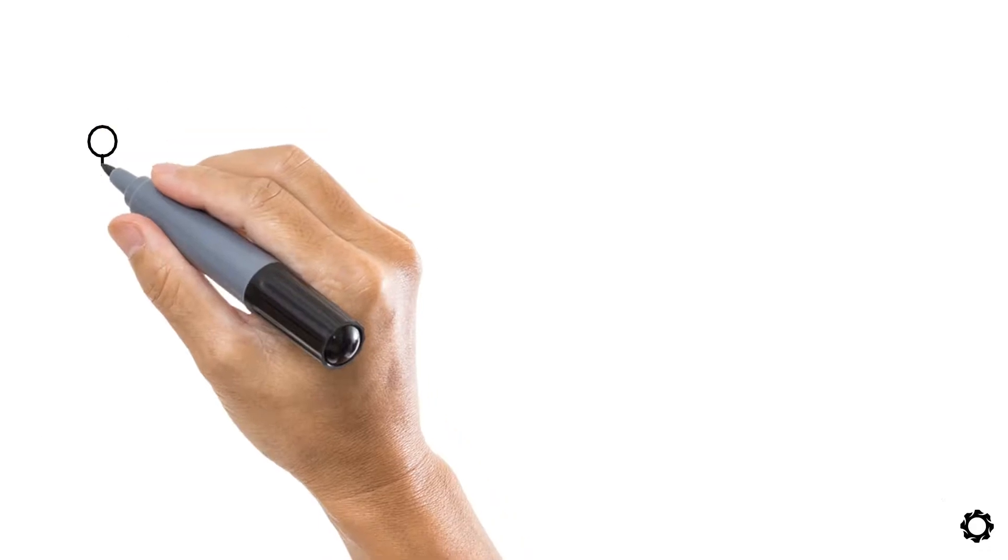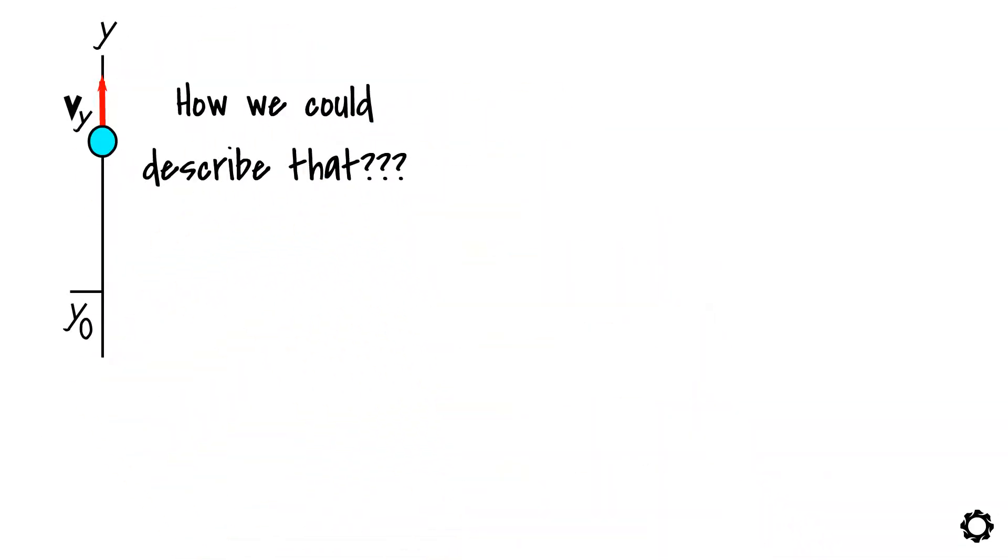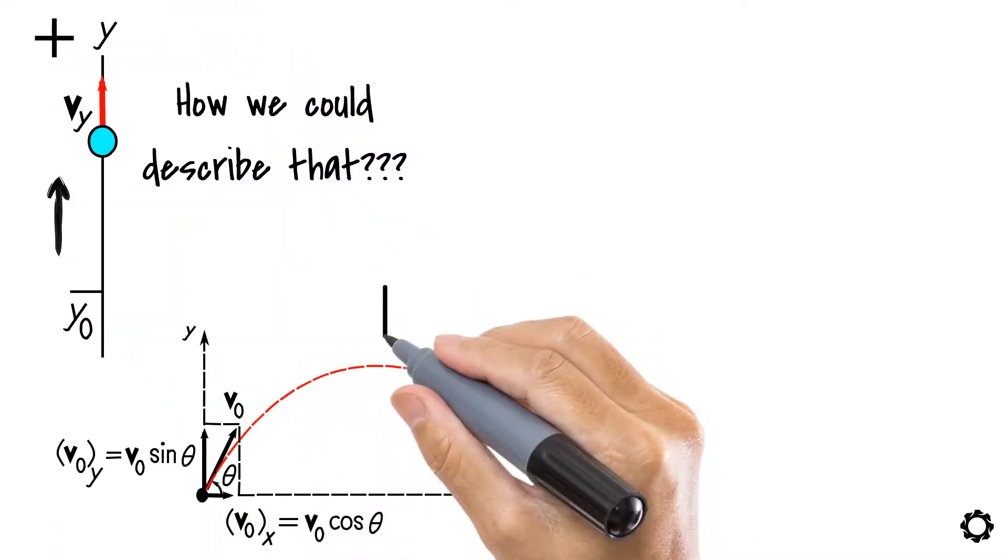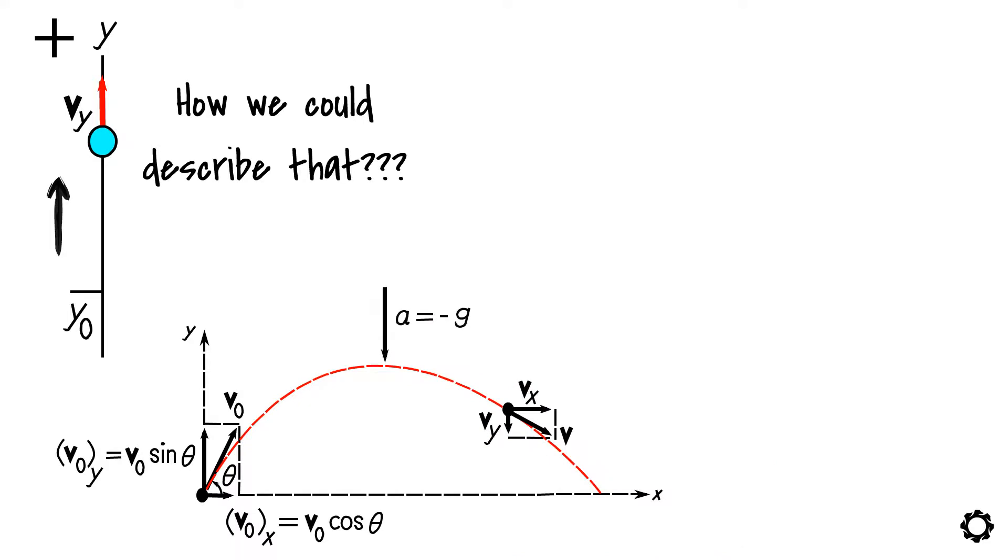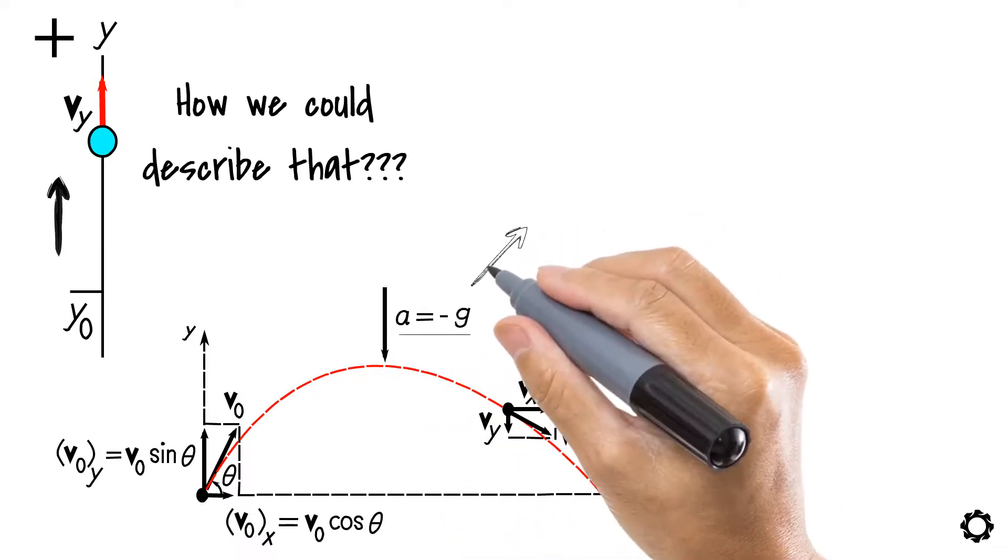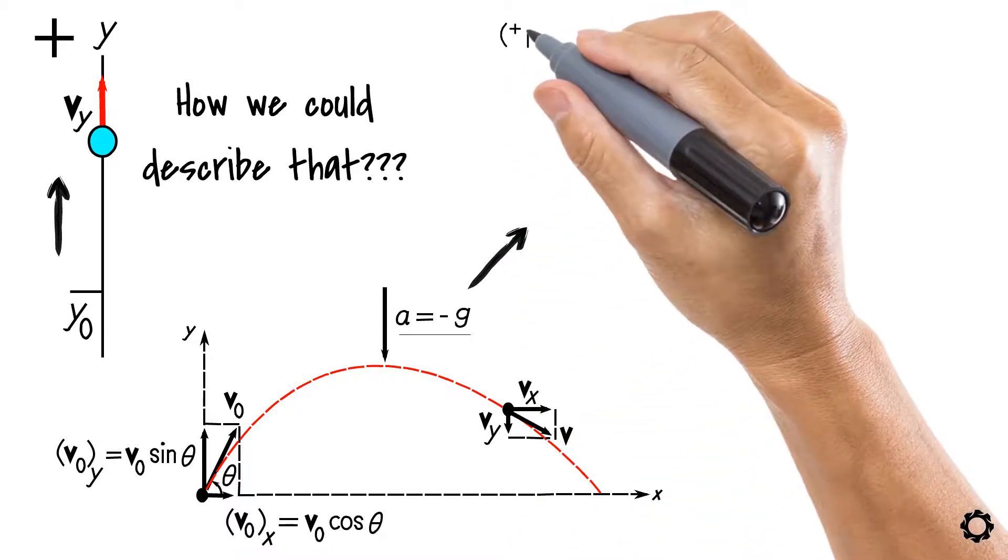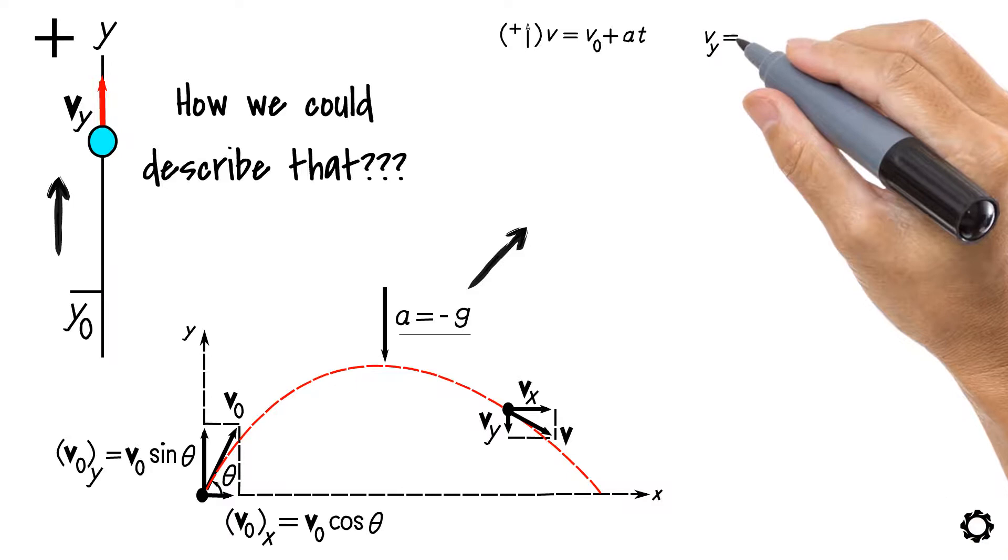How about the vertical motion of the projectile? How could we describe that? By noting that the positive y-axis direction is upwards, our cannonball would have negative vertical acceleration. Then, by substituting this information into the same set of kinematic equations that we have used previously, we would obtain the following equations for the vertical motion of our projectile.